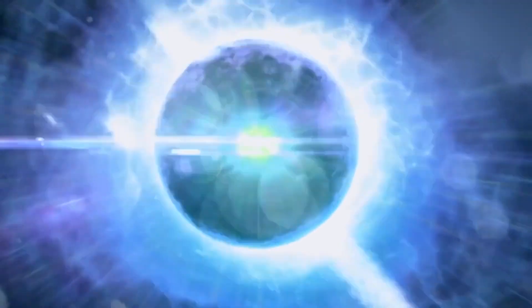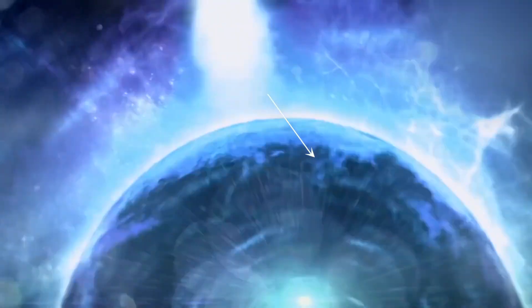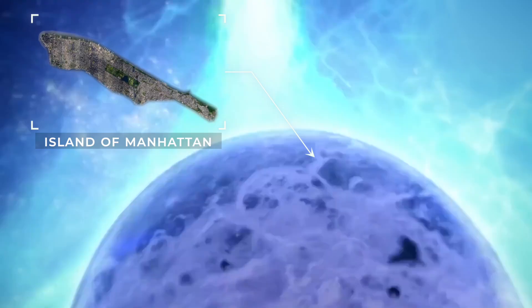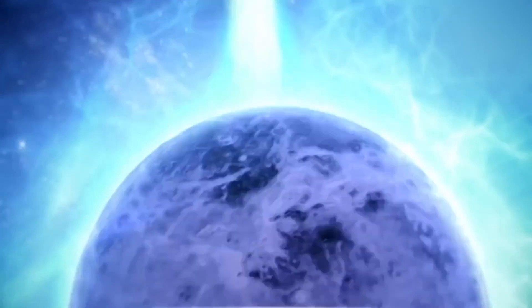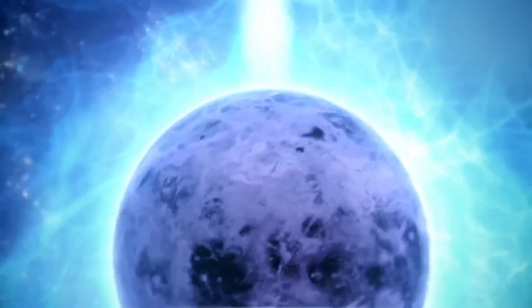This pulsar is around 1.4 times the mass of the sun, but also contained in a sphere only 12 miles wide, about the size of the island of Manhattan. This pulsar also spins dizzyingly fast, 172 times every second.